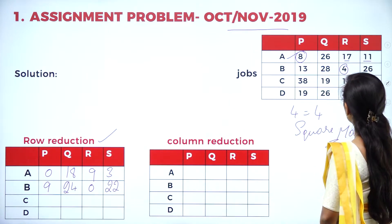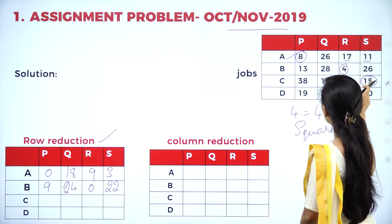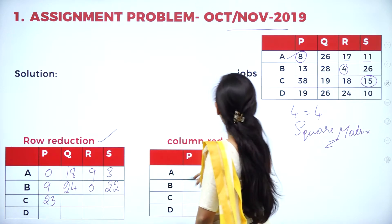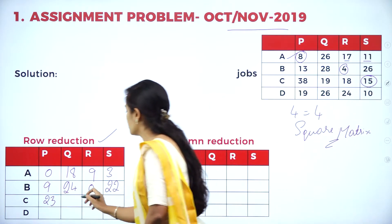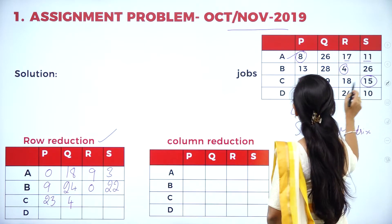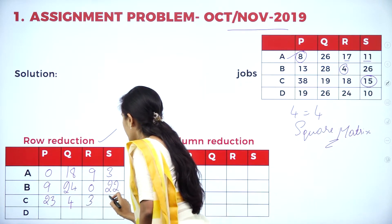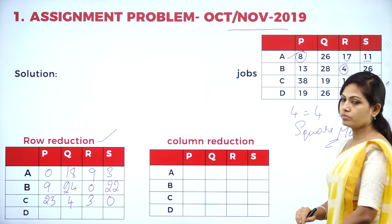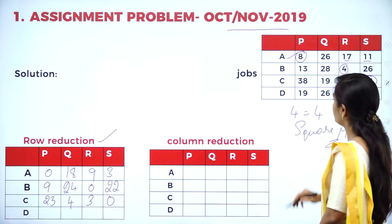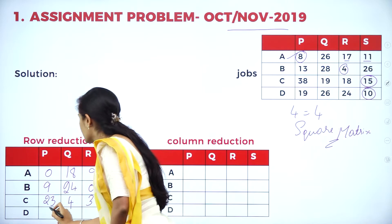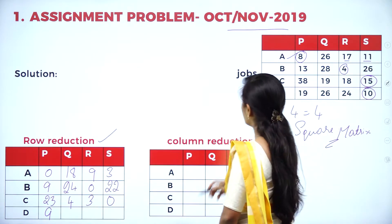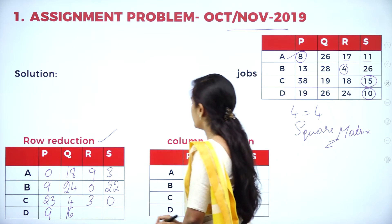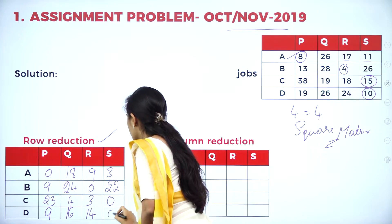In the third row, the least value is 15. So 38 minus 15 is 23; 19 minus 15 is 4; 18 minus 15 is 3; 15 minus 15 is 0. In the fourth row, the least value is 10. So 19 minus 10 is 9; 26 minus 10 is 16; 24 minus 10 is 14; 10 minus 10 is 0. Row reduction is now finished.